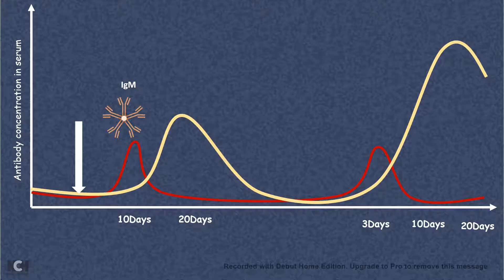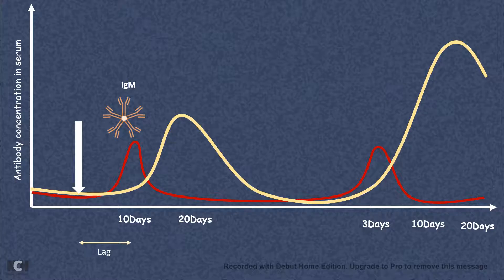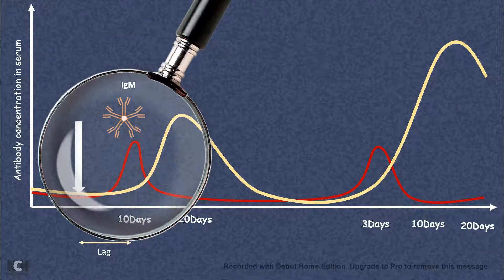Let's look at the primary immune response first. In the primary immune response there is a lag phase, and let's try to understand why there is a lag phase between a pathogen invasion and the antibody level increasing.